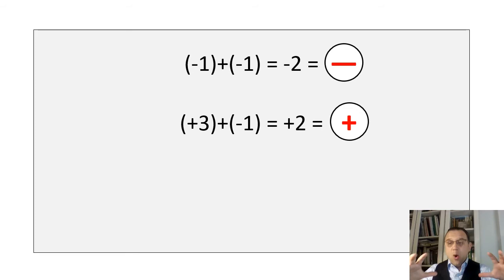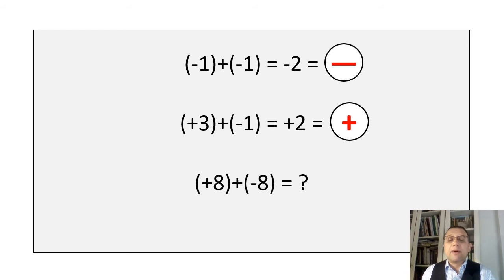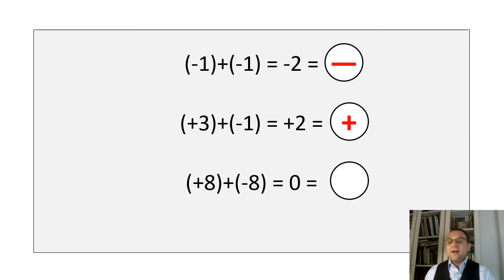Let's take a look at this number: 8 plus minus 8 equals zero, which means neutral. We have 8 positive particles and 8 negative particles, and the whole structure will become neutral.